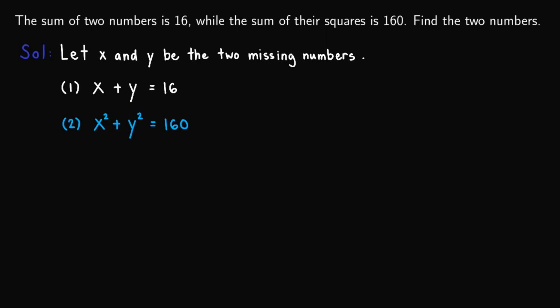First, take note that if we square the first equation, we'll obtain x squared plus 2xy plus y squared equals 256. So we obtain this one by the square of a binomial. And take note that 16 squared is equal to 256.